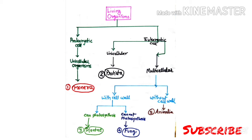Secondly, if the cell is eukaryotic, then there are two possibilities: it may be unicellular or multicellular. If it is unicellular, you get the second kingdom, that is Protista. If it is multicellular, there are further two possibilities. If it contains a cell wall, there are two categories: those which can photosynthesize give you the third kingdom, Plantae; and if they cannot photosynthesize, you get the fourth kingdom, Fungi.